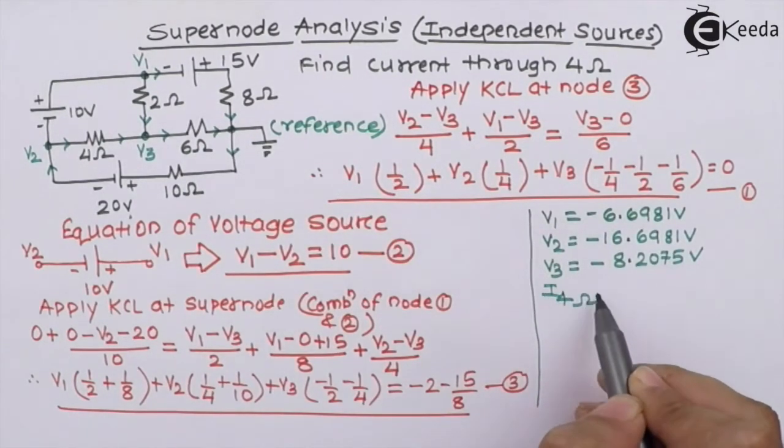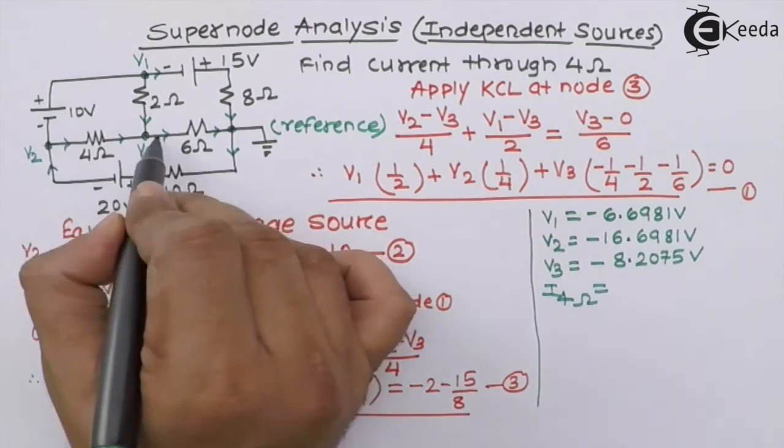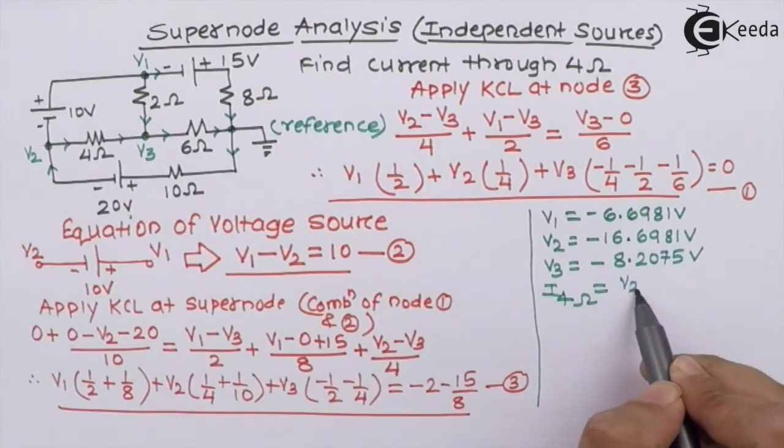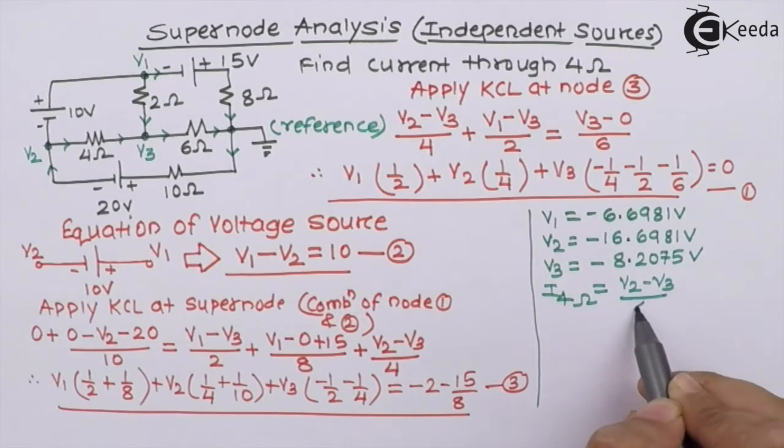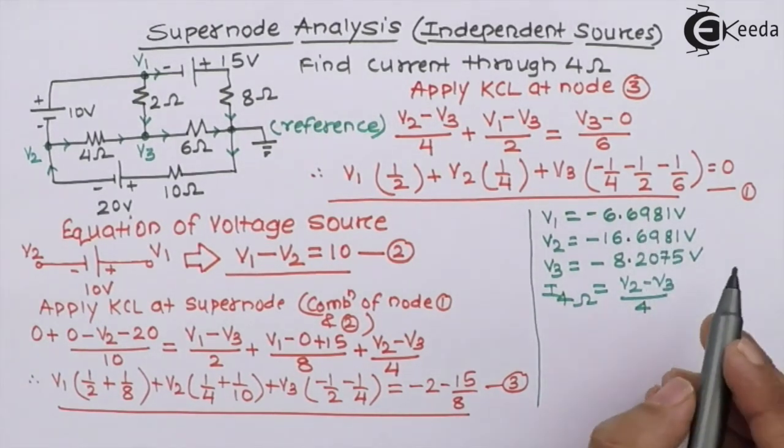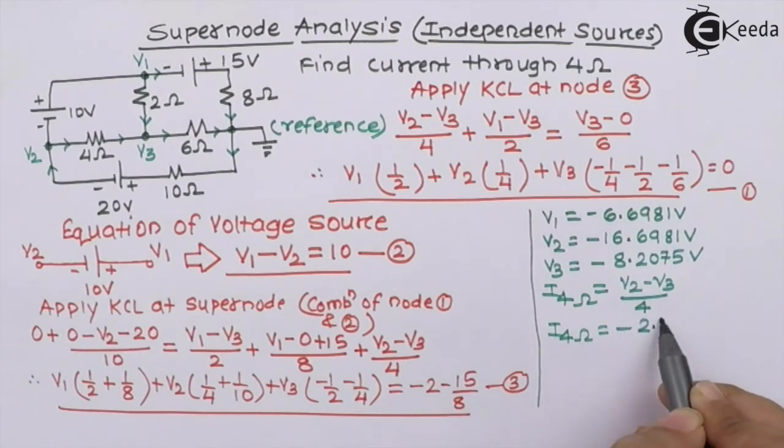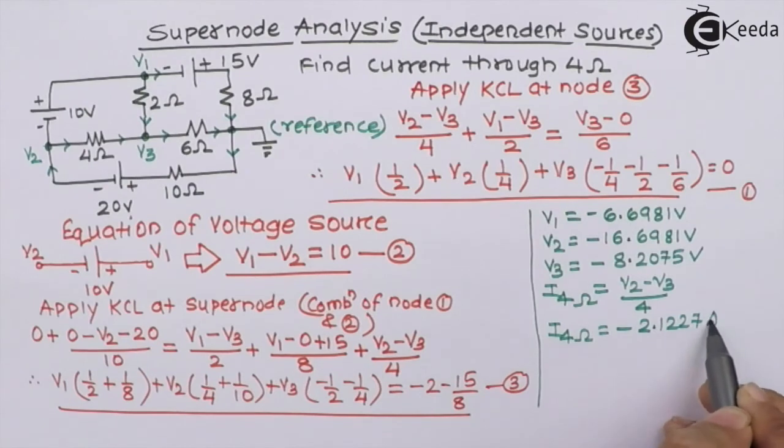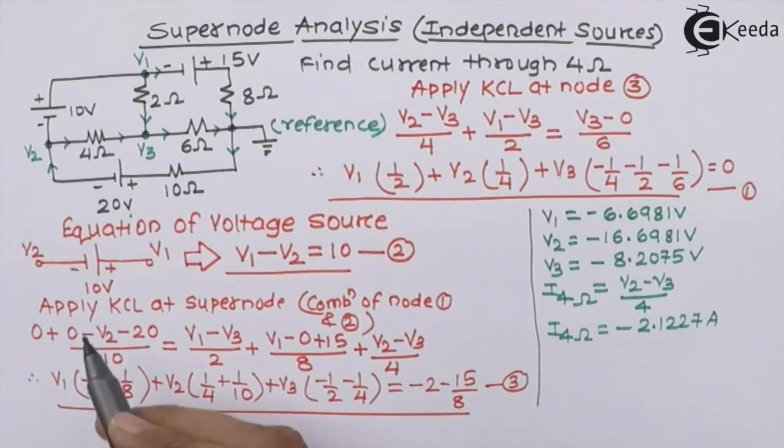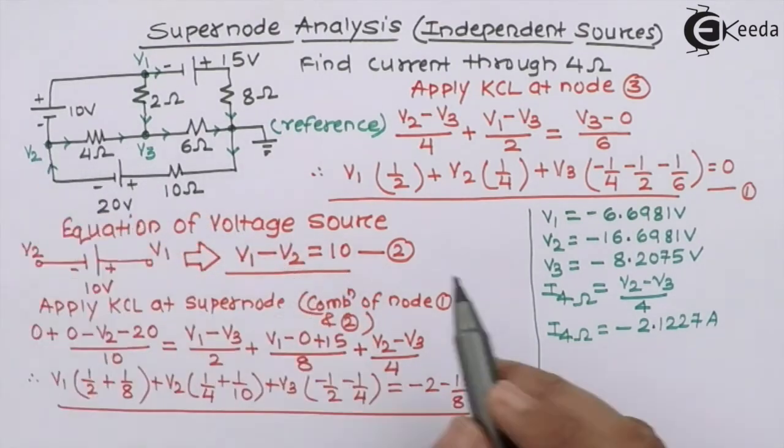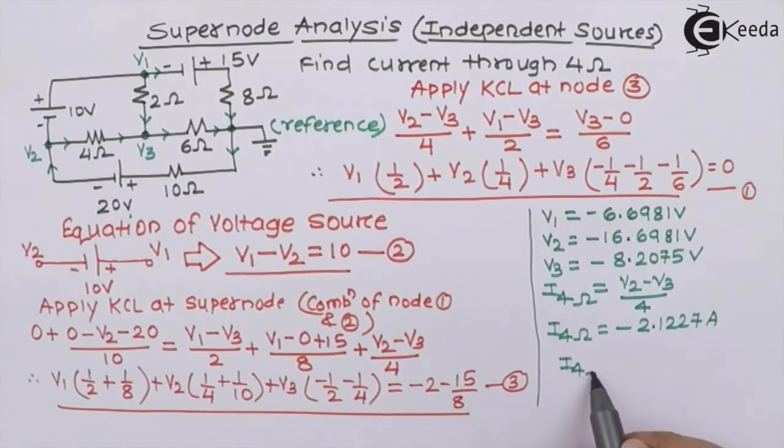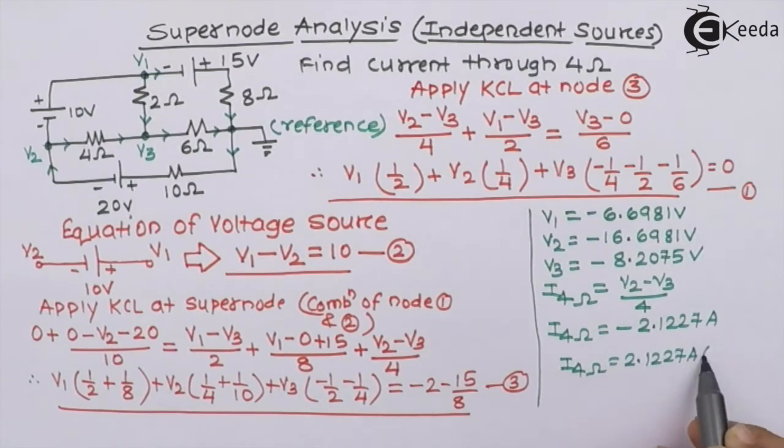What we have to get is current through 4 ohm. So current through 4 ohm, i4 ohm, is nothing but this current, which is V2 minus V3 upon 4. If you substitute all the values, we will get i4 ohm as minus 2.1227 ampere. So minus implies whatever the current direction we have marked need to be reversed. So finally, i4 ohm is 2.1227 ampere, and the direction will be reversed, so it could be like this.